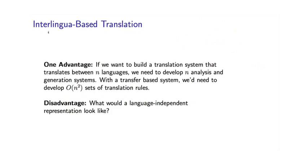There are some potential advantages of this method. In a transfer-based system, let's say we have N different languages — say N equals 10 or N equals 100 — and we want to build translation systems between all these different pairs of languages. In transfer-based systems, for every different pair of languages, we're going to have to build a different transfer lexicon and rebuild the transfer component. So in this case, N squared is approximately 100; in this case, N squared is approximately 10,000. That's a lot of work building the different transfer components for the different language pairs.